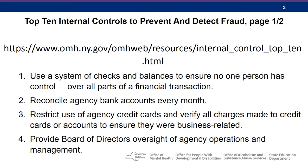Top 10 Internal Controls to Prevent and Detect Fraud: 1. Use a system of checks and balances to ensure no one person has control over all parts of the financial transaction. 2. Reconcile agency bank accounts every month. 3. Restrict use of agency credit cards and verify all charges made to credit cards or accounts to ensure that they were business related. 4. Provide Board of Directors oversight of agency operations and management.